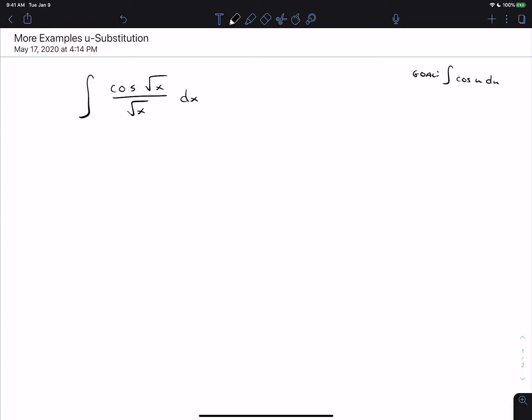The goal here is to get it so that it's cosine u du, and it might not be obvious at first that that's going to work. If you're going to match that form, u has to be the square root of x, which is x to the one half. Du then is one half x to the negative one half dx, which simplifies to one over two square root of x dx.